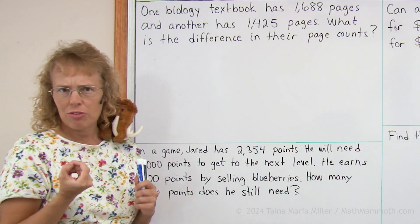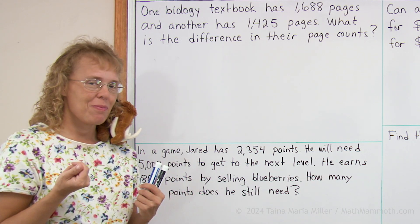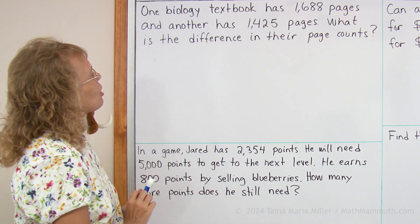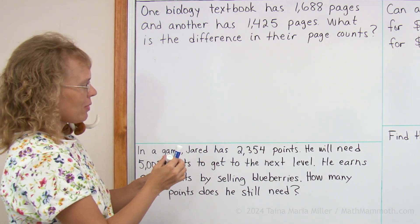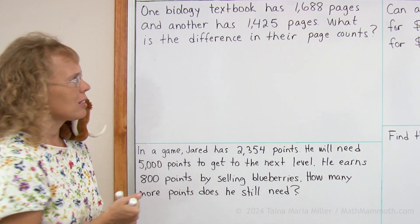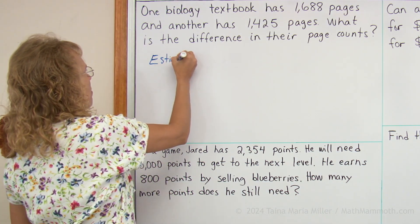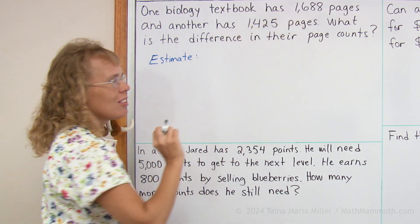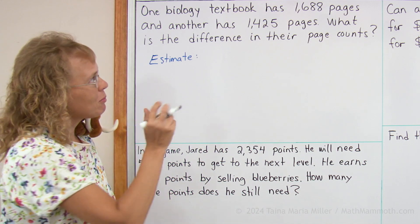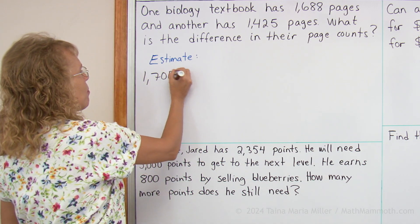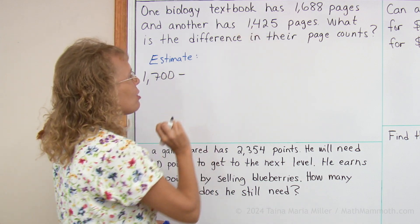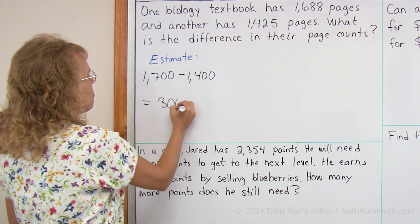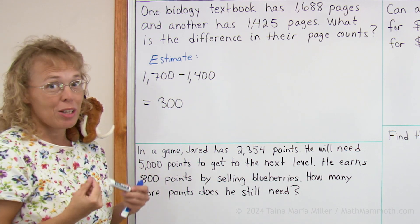How do you find out the difference of two numbers? You subtract the numbers, so we need to subtract those two. Before we do, let's do a quick estimate using rounded numbers. I'm going to round 1688 to the nearest hundred, which makes it 1700. And 1425 rounded to the nearest hundred, we get 1400. So the difference is about 300 pages.